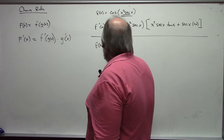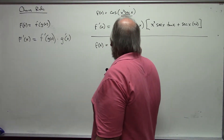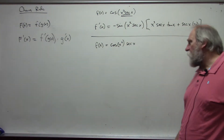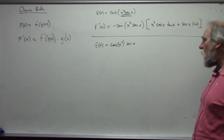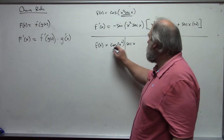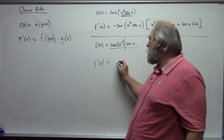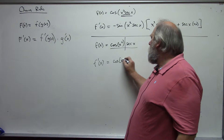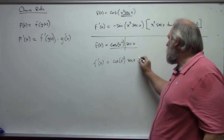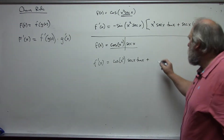Now I'm going to change the ordering around. I have the cosine of x squared times secant of x. In this case, the main operation — the main way functions are combined — is by multiplication, so I have to use the product rule first. The derivative is: first times the derivative of the second, which is secant of x tangent of x, plus second...